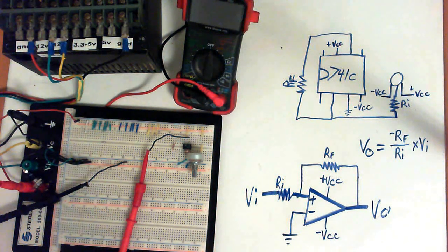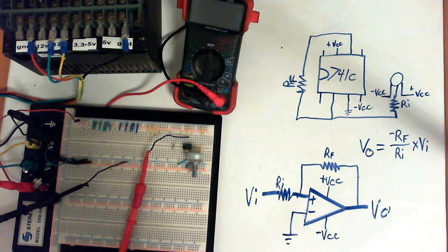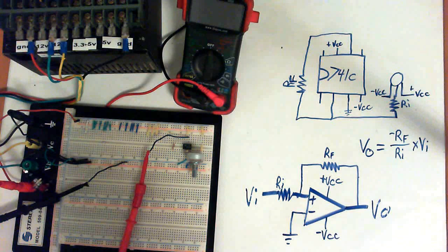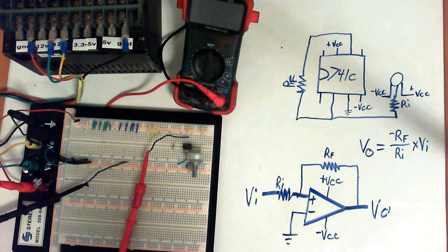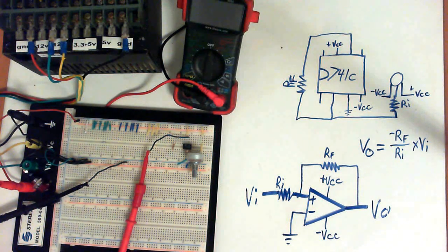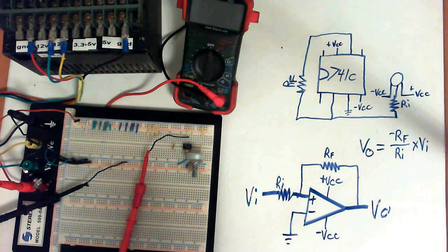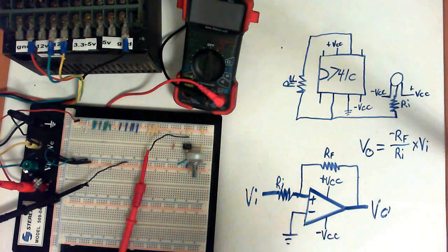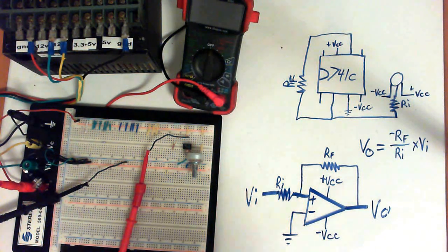Op amps are very precise. They're very predictable. And the external components determine how it operates. So the more precise external components you can get, the more predictable your results will be, and the closer to ideal circuit you'll have.